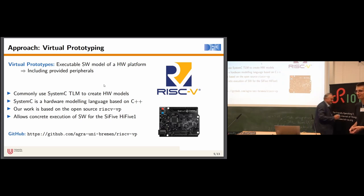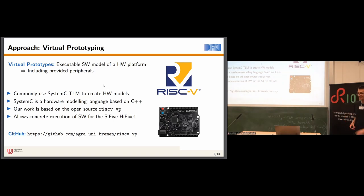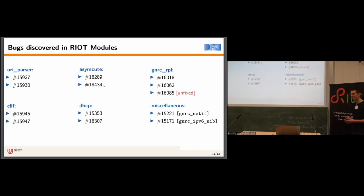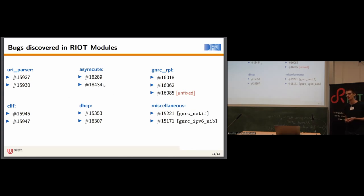A comment from the room: were these techniques used to find bugs in GNRC or TCP? No. The bugs I found in GNRC were prior work done as part of my master's thesis, and those were found through fuzzing. Before we started exploring symbolic execution, I did some work on fuzzing RIOT modules as part of my master's thesis — that's where I found many of the bugs in the TCP implementation.